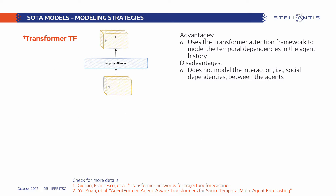In the state-of-the-art, previous works have focused largely on modeling the agent's behavior. Using transformer networks to model temporal dependencies instead of LSTMs has shown a lot of improvement in the field, such as in the Transformer-TF paper. However, the social and interaction-based modeling was missing in this paper.